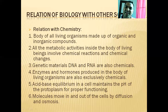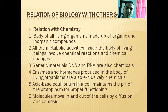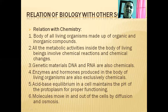Genetic materials — DNA and RNA, deoxyribonucleic acid and ribonucleic acid — are present in our cells; those are chemicals. Enzymes and hormones produced in the body of living organisms are exclusively chemicals. Hormones present in our body give signals to different target cells and are produced by our glands. Acid-base reactions are also maintained in the cell in the form of chemical reactions. Molecules move in and out of the cell by diffusion and osmosis.